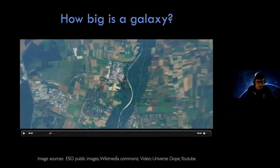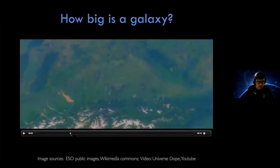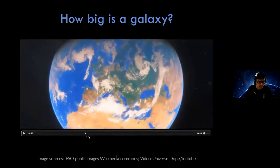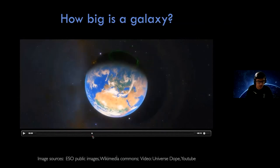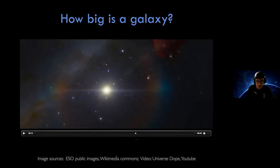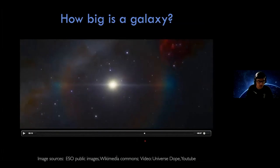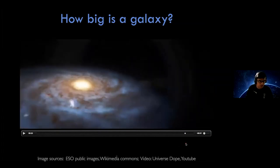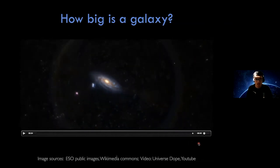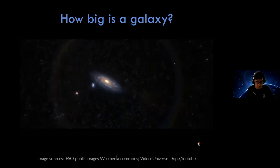We got to Europe in around seven seconds, Earth in around eight seconds, the Sun around 15 seconds, and the Milky Way in around 24 seconds. So that gives you an idea of how big the galaxy actually is if you're zooming out almost uniformly. We have so many, so many stars in it.